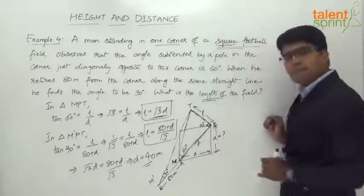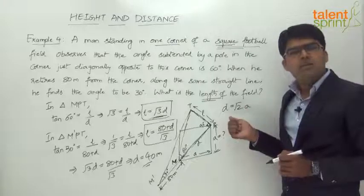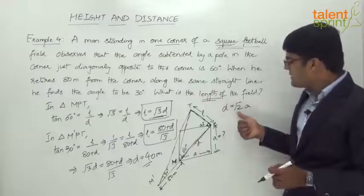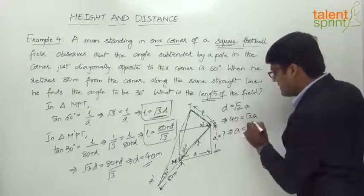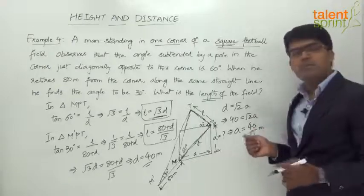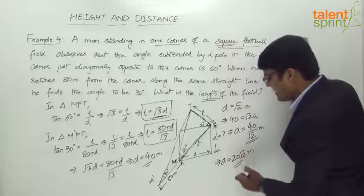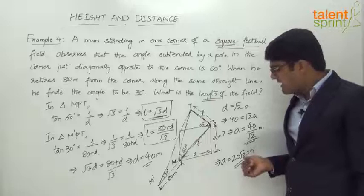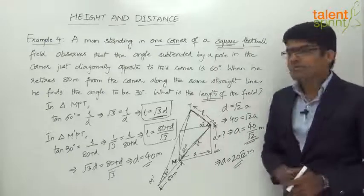But the question asks for the length of the field, which is A. We know that the diagonal of a square field D equals root 2 times A — this is a standard formula from mensuration. We already know D is 40, so 40 equals root 2 times A, which gives A equals 40 by root 2, which simplifies to 20 root 2 meters. If a decimal value is required, root 2 is approximately 1.414, so 20 times 1.414 equals 28.28 meters. So 20 root 2 meters is the length of the field.